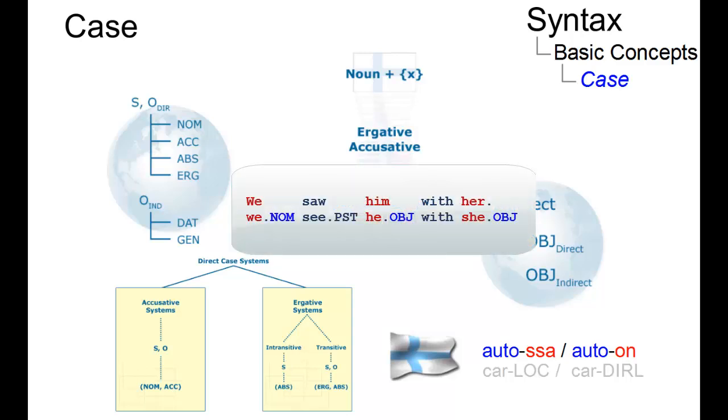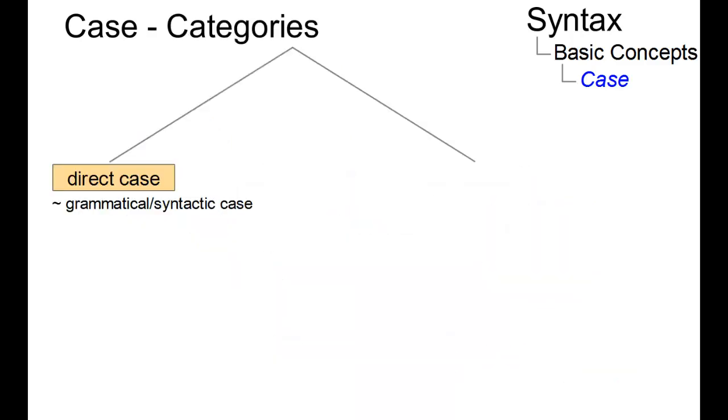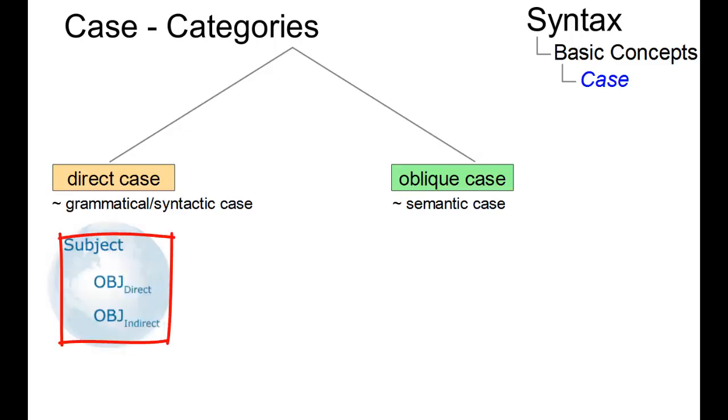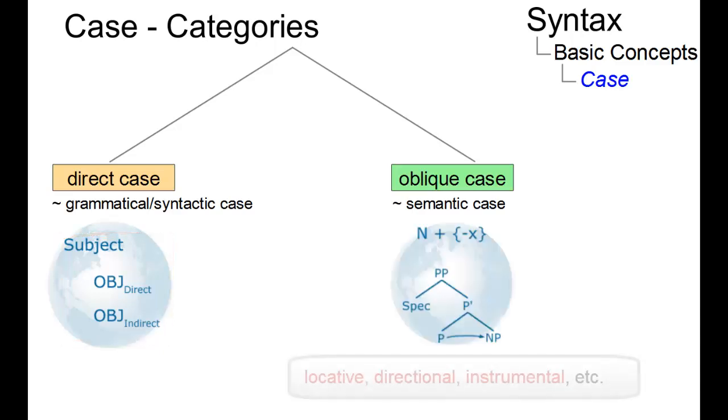The notion of case can be divided into two categories. The direct case, also referred to as grammatical or syntactic case, and the oblique case, also referred to as semantic case. The direct case is used to mark the basic syntactic function subjects and objects. The oblique case marks a variety of semantic functions.